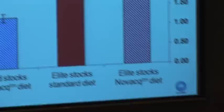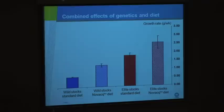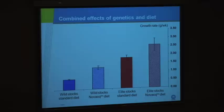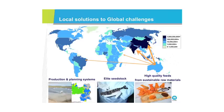Bearing in mind that most prawn farmers in Australia and the rest of the world using wild stocks get growth rates of about half a gram a week — if you feed progeny of wild stocks with this new diet, you get a good improvement in growth performance. If you feed elite selected stocks with the standard diet, you get better growth rates still. But if you feed elite stocks with this new diet, what you get is a 198% improvement in growth rates, which is pretty spectacular, and again creates a real opportunity for Australia.